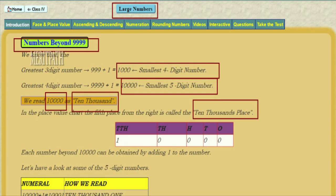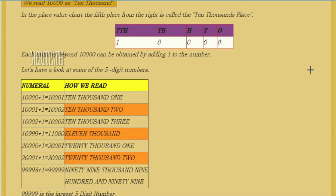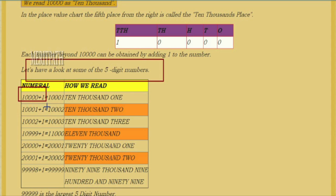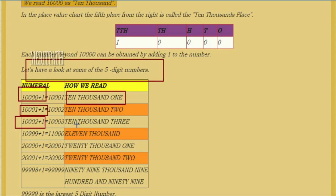Each number beyond ten thousand can be obtained by adding one to the previous number. When we take ten thousand and add one, we get ten thousand and one. Then ten thousand one plus one gives ten thousand two. We call this number ten thousand two. Again, adding one to ten thousand two, we get ten thousand three.